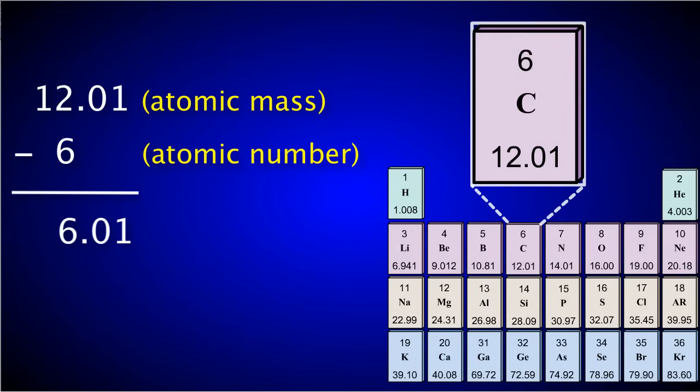So 12.01 minus 6 equals 6.01, which rounds to 6. So the number of neutrons in a neutral atom of carbon is 6.